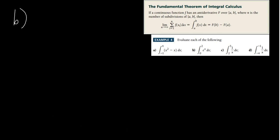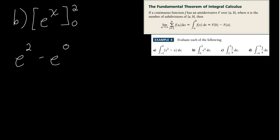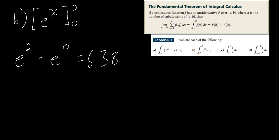Part B is a lot easier. We know that the derivative of e to the x is e to the x, so the antiderivative of e to the x is also e to the x. We write e to the x in brackets from 0 to 2. That's just e squared minus e to the 0th power, which is e squared minus 1. E squared is 7.389, minus 1 gives us 6.389.